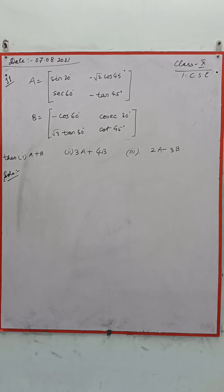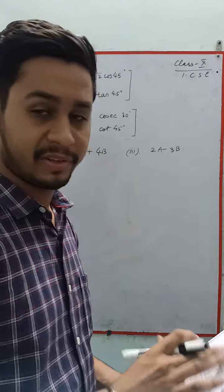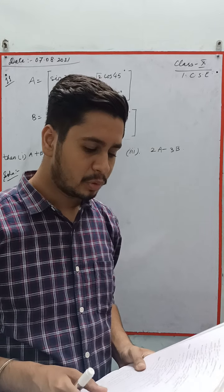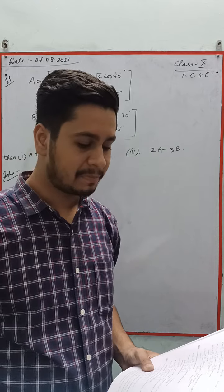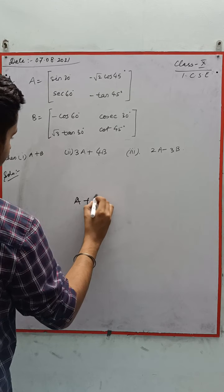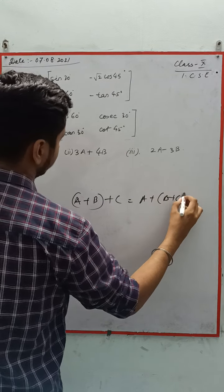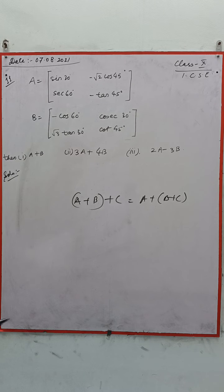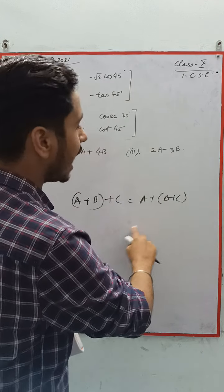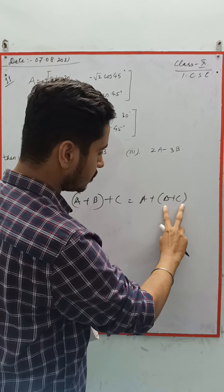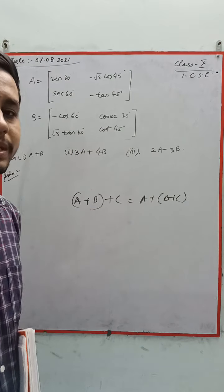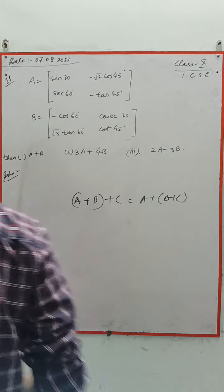Now let's come to the 10th question. You are given with 3 matrices and you have to find A minus B plus 2C, which you can easily find. For part (c), you need to prove that A plus (B plus C) equals (A plus B) plus C. That is just the associative property. You take LHS, find A plus B and then add C. Then take RHS, find B plus C and then add A. Both results will be the same, hence proved.